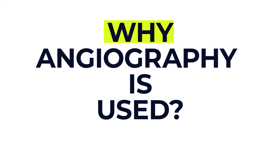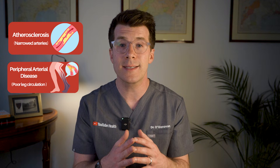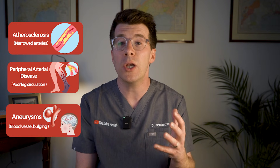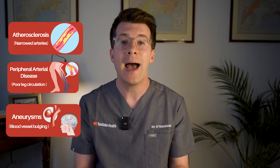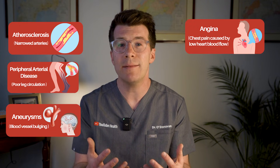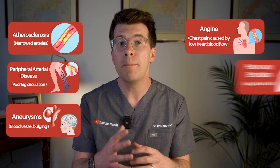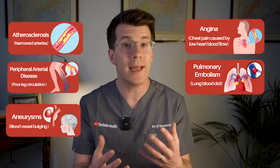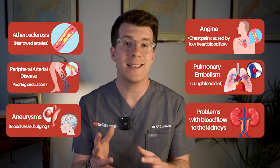Your doctor might recommend an angiography to help diagnose, investigate or plan treatment for a range of conditions such as narrowing of the arteries known as atherosclerosis, peripheral arterial disease which affects blood flow to your legs, aneurysms which is a bulging or ballooning in the wall of a blood vessel including those in the brain, angina which is most commonly chest pain caused by reduced blood flow to the heart, blood clots or a pulmonary embolism which is a blood clot in the lung, or problems with blood flow to the kidneys. There are also different types of angiography depending on what part of the body is being checked, like coronary angiography for the heart or cerebral angiography for the brain.